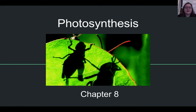Photosynthesis is chapter 8 in your textbook. You're going to be taking Cornell notes today, so draw your line about an inch from your margin, and you're going to take your notes on the right side of the line. Then when you're done with your notes, you're going to add questions in the left-hand column and a summary at the end of your notes.